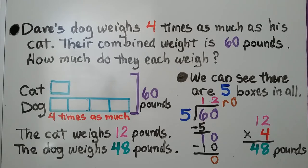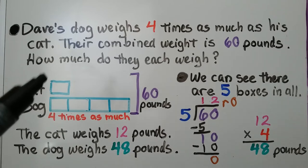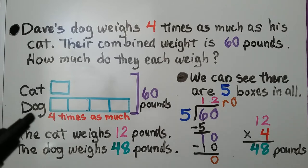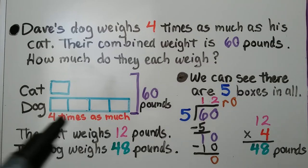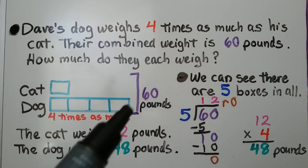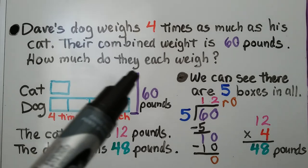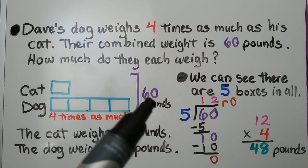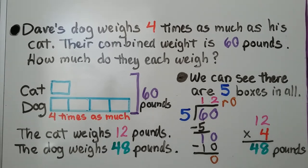Dave's dog weighs four times as much as his cat. Their combined weight is 60 pounds. How much do they each weigh? What we do is we draw one box for the cat, and the dog is four times as much, so we draw four boxes for the dog. Their combined weight is 60 pounds, and we put a bracket here with 60 for the 60 pounds.